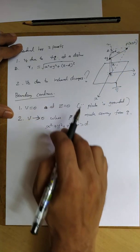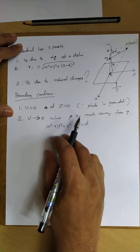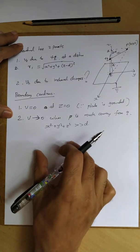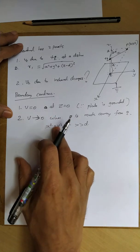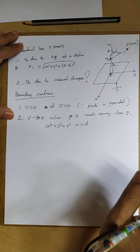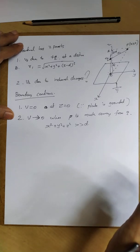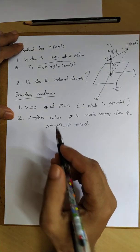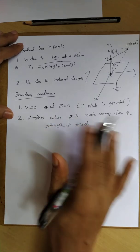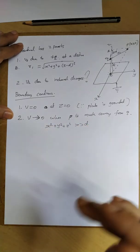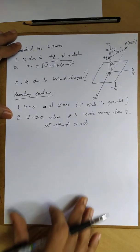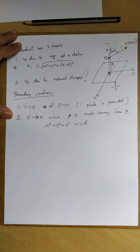These are the two boundary conditions. By using the uniqueness theorem — by induction, experience, or educated guess — we find a potential that satisfies both boundary conditions. That potential will be the solution. This is how the method of images works for problem solving.